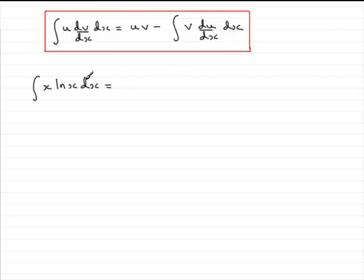Now, whenever you've got a natural log function, you always make this function the u part. So, this is going to be my u and this part here, x, is going to be my dv dx.